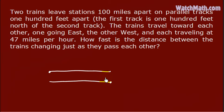The trains travel towards each other, one going east and the other west, and each travelling at 47 miles per hour. How fast is the distance between the trains changing just as they pass each other?